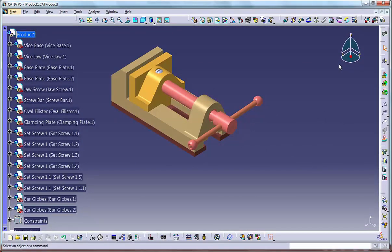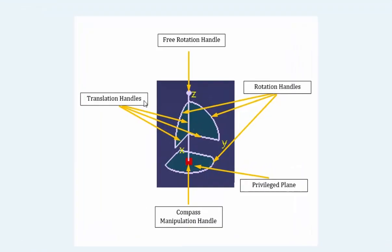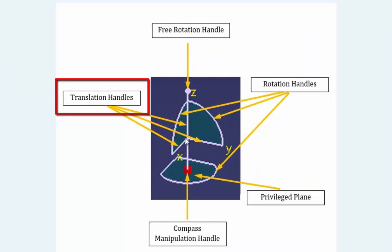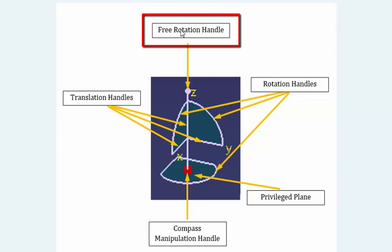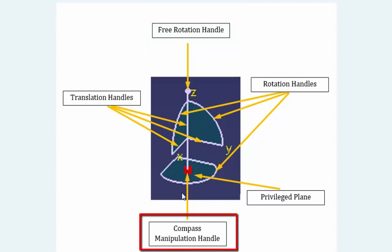In most applications, the compass has two basic uses: manipulating the view and translating or rotating geometric objects. The compass consists of four common elements. The translation handles let you move the view or some selected geometry along the compass axis XYZ. You can pan the view by clicking and dragging any of the translation handles. The rotation handles let you rotate the view or some selected geometry about the compass axis XYZ. The free rotation handle lets you rotate the view or object freely in space and works much like a virtual space ball. The compass manipulation handle is what you use to move the compass onto an object before you reposition the object.